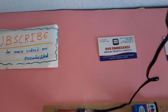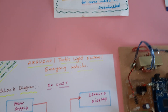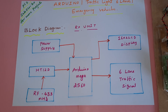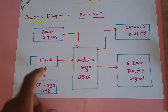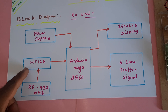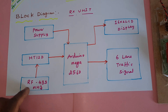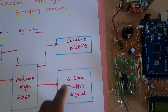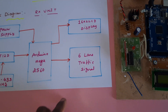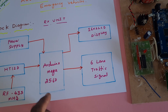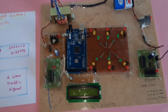Hi, we are from SVS Embedded. The project title is Arduino Traffic Light Six Lanes Emergency Vehicles. We are using an Arduino Mega 2560, HD-12D RF 433 MHz power supply module, 16x2 LCD display, six traffic lanes, and a transmitter part which is the ambulance part.